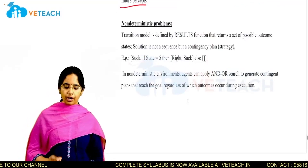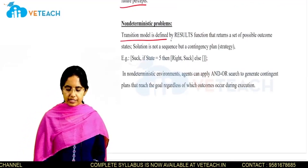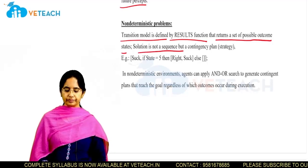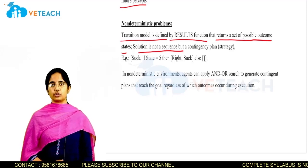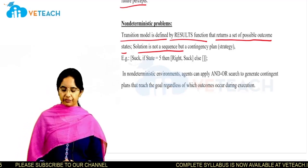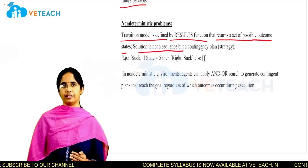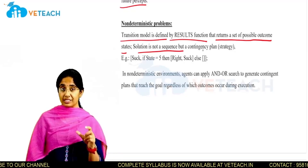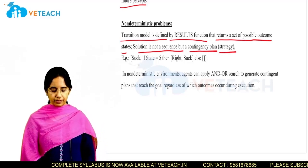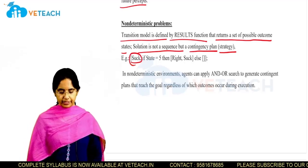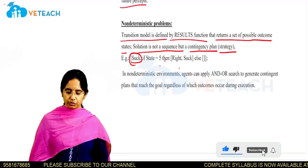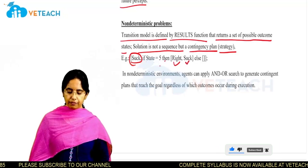In non-deterministic problems, the transition model is defined by a results function that returns a set of possible outcome states. The solution here is not a sequence — it will not be like a simple command or plan. Instead, it will be a contingency plan, which we call a strategy. For example, if the state of the machine is 5, you need to turn right and perform a suck operation.